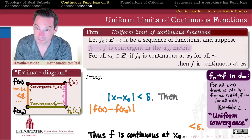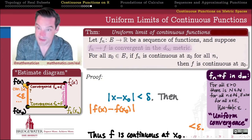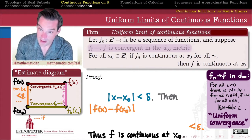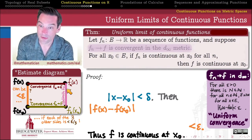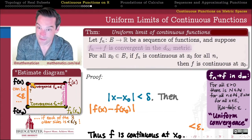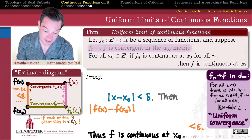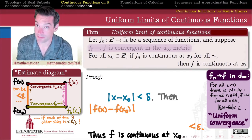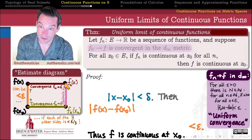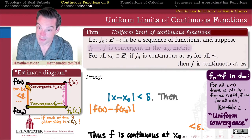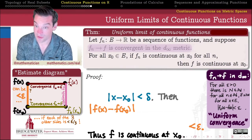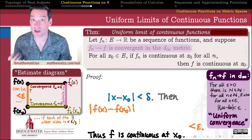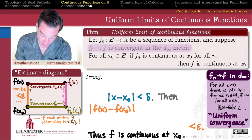This distance I'm trying to control can be made less than epsilon if I take a detour around the other three sides, and if each of those three sides has a distance less than epsilon over three. If each of the three distances is less than epsilon over three, then by the triangle inequality, this distance is less than or equal to the sum of those three — and since each is less than a third of epsilon, their sum is less than epsilon. That is my whole strategy in one diagram.